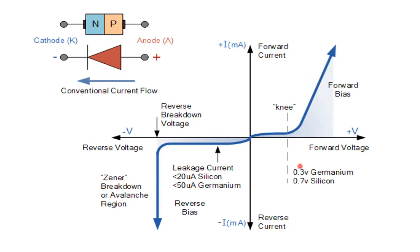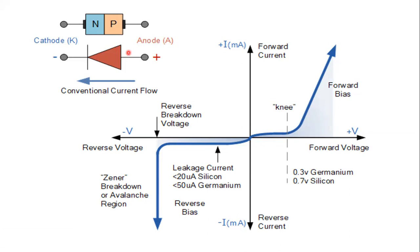During forward biased condition, the knee voltage or cut-in voltage for germanium is 0.3 volts and for silicon is 0.7 volts. From this point onwards, the current flowing through the diode increases rapidly. When the diode is connected in reverse bias — positive connected to negative and negative connected to positive — the diode has reverse polarity.